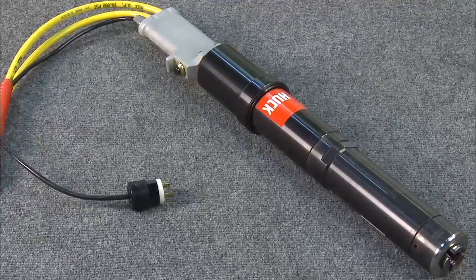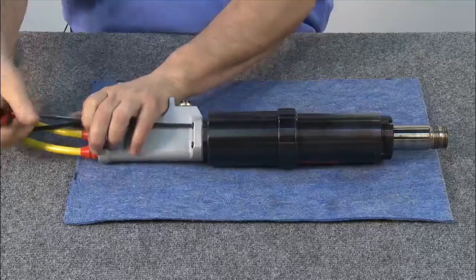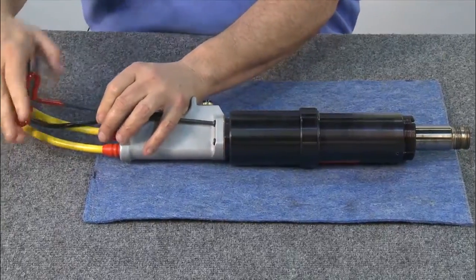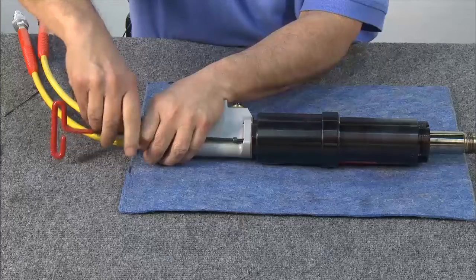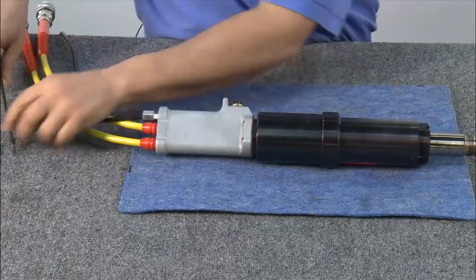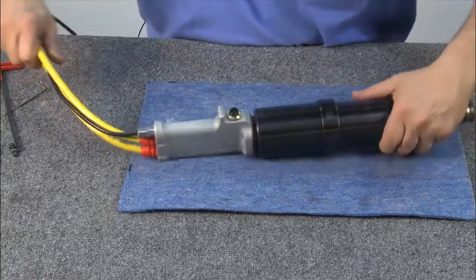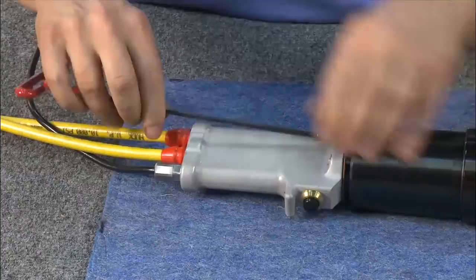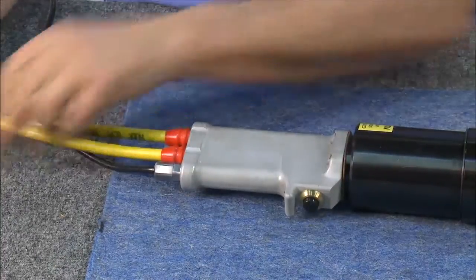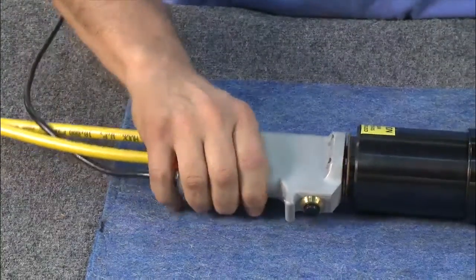To disassemble the tool, begin by removing the handle. The handle has four screws that need to be removed. Once the screws have been removed, pull the handle off and slide it back.